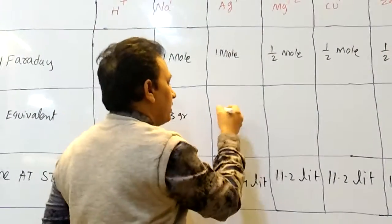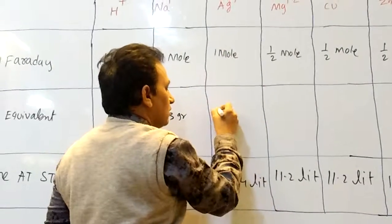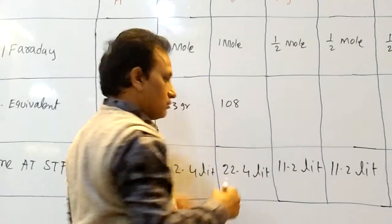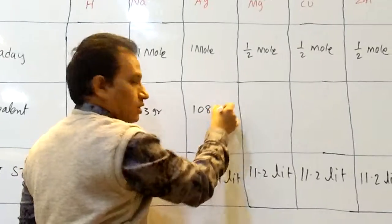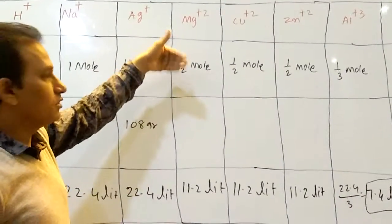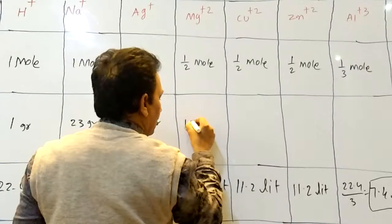Silver is 108, 108 by charges plus one means one, 108 grams. Next, magnesium. Magnesium is 24 by 2 means 12 grams.